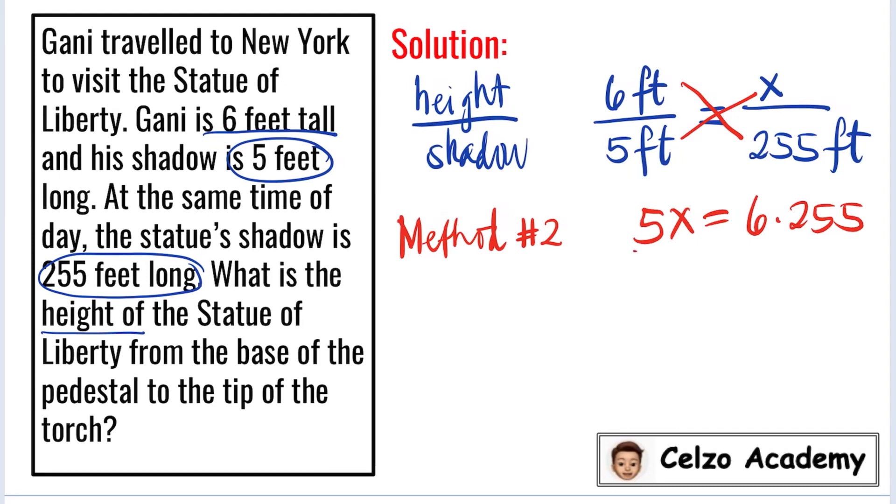I will divide both sides by 5 right away. 5 divided by 5 is 1, so we have 1X. And now I can mentally simplify 255 divided by 5. 25 divided by 5 is 5, 5 divided by 5 is 1. So now I can simply multiply 6 times 51, which is 306.